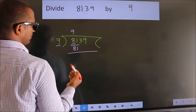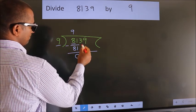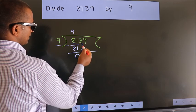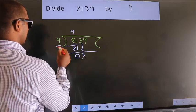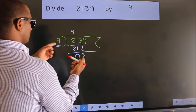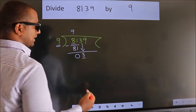Now we should subtract. We get 0. After this, bring down the beside number. So, 3 down. Here we have 3, here 9. 3 is smaller than 9, so we should bring down the second number.